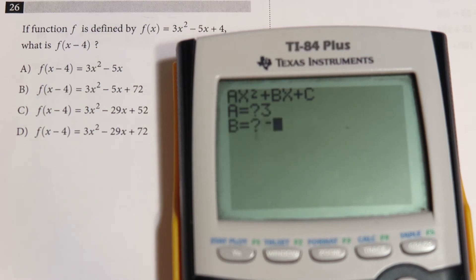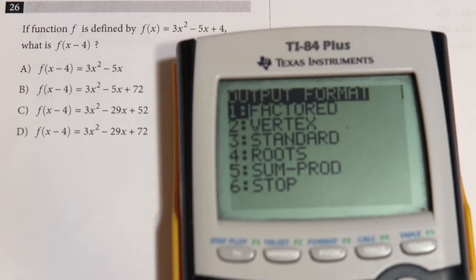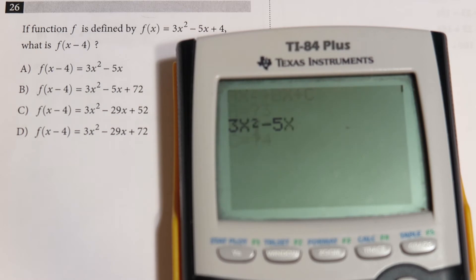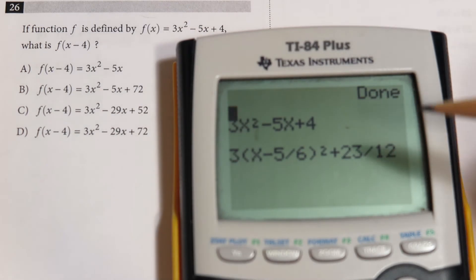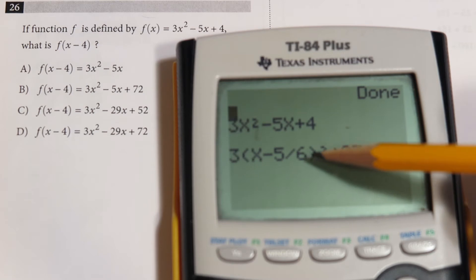I want it in the vertex form, so I'm going to choose option 2. As you can see, the vertex is going to be at 5/6, and the y-coordinate is going to be 23/12.